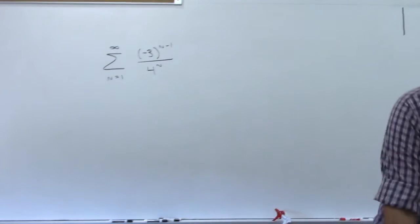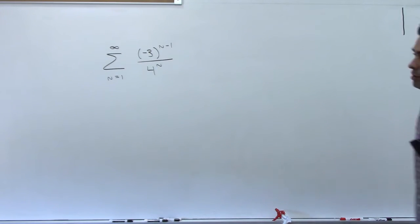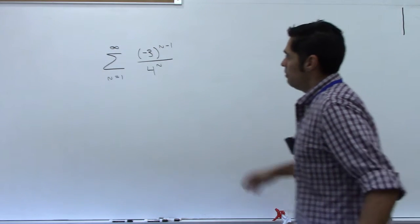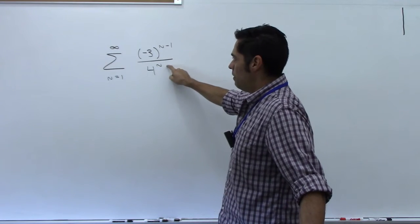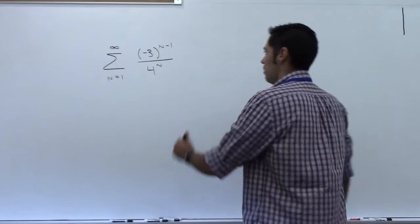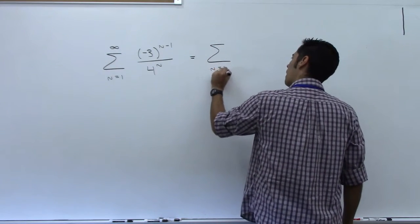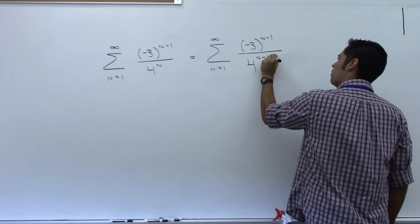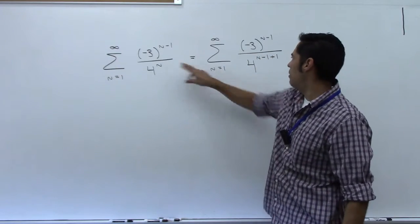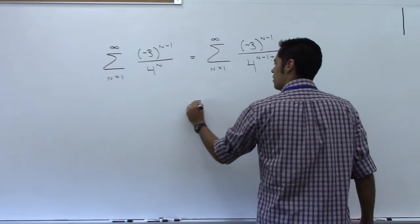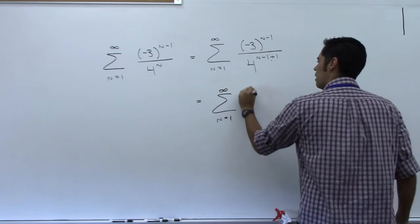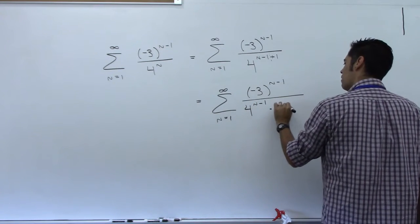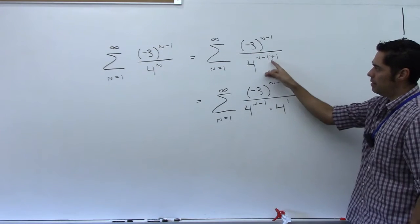They've already determined the formula, so it's up to you to see if this is geometric — you know it is because they told you — and figure out if it converges. You need to make sure that anything raised to the n power is n minus 1. The 4^n on the bottom is not, so I'll use the hidden zero trick: rewrite 4^n as 4^(n-1) times 4^1. Then split it: (-3)^(n-1) over 4^(n-1) times 4.